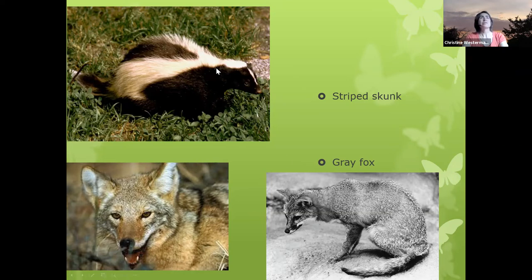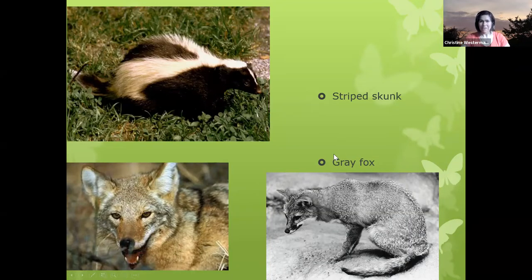This is a picture of a striped skunk, which is the common skunk we have around here. There are also a few species of spotted skunks in Texas, which are more unusual.